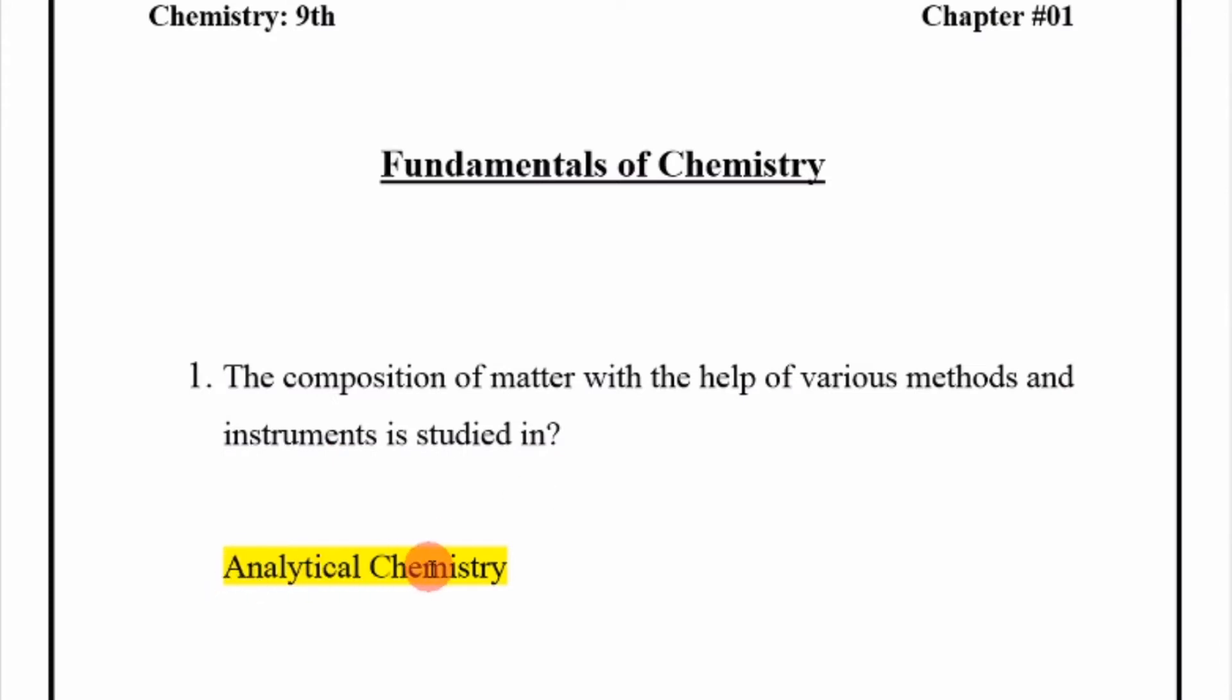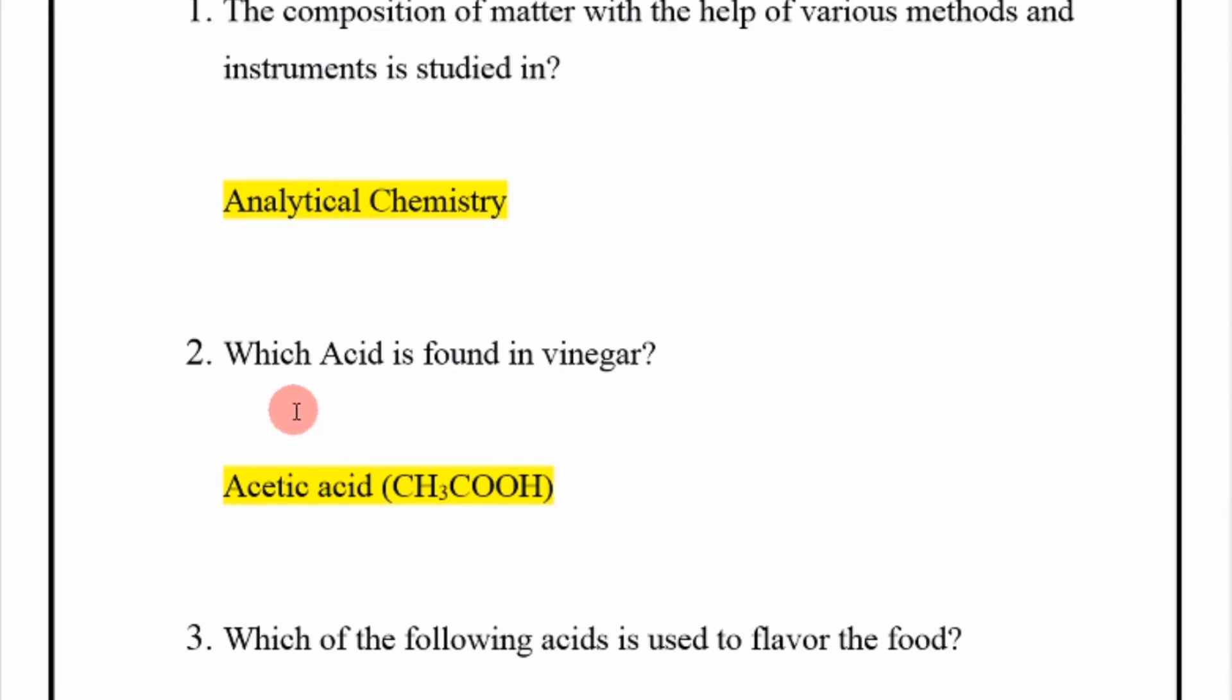Analytical chemistry. The composition of matter with the help of various methods and instruments is studied in analytical chemistry. Next, which acid is found in vinegar? Acetic acid. Which acid is found in vinegar? Acetic acid, CH3COOH.